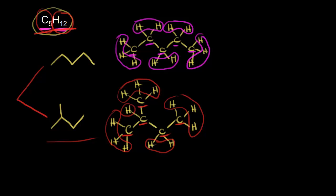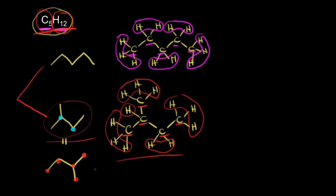To draw another structural isomer, some students might say we could start with four carbons in our chain again and this time show a branch off of a different carbon. But actually, these are just two different ways to represent the same molecule. If you analyze that second structure, the connections are the same — we have a CH bonded to a CH3, bonded to another CH3, and bonded to a CH2, with that CH2 bonded to a CH3. That's the same structure, just a different drawing.